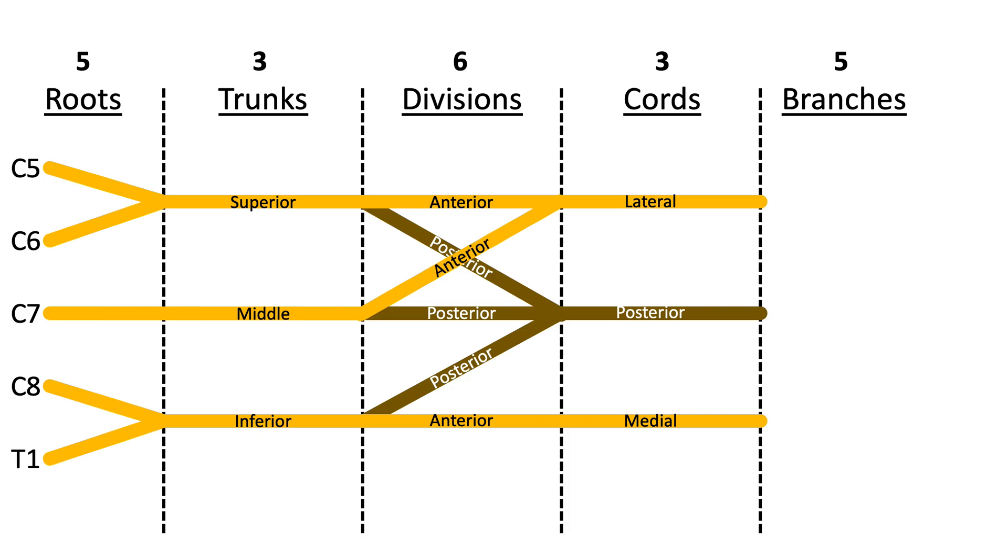If you connect the lateral and medial cords using a sigma formation, you can get three of the five terminal branches. This includes the musculocutaneous nerve, the median nerve, and the ulnar nerve. Note that the posterior cord contributes to the remainder of the two branches: the axillary and radial nerves.